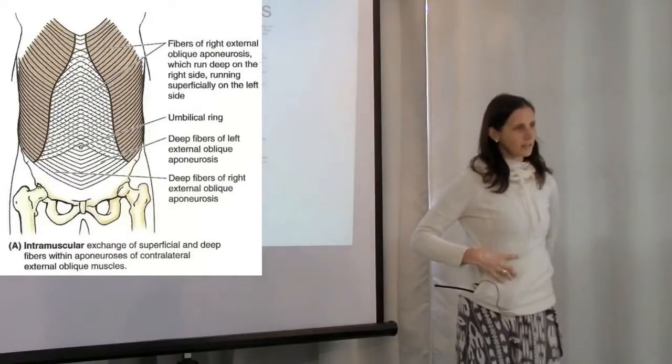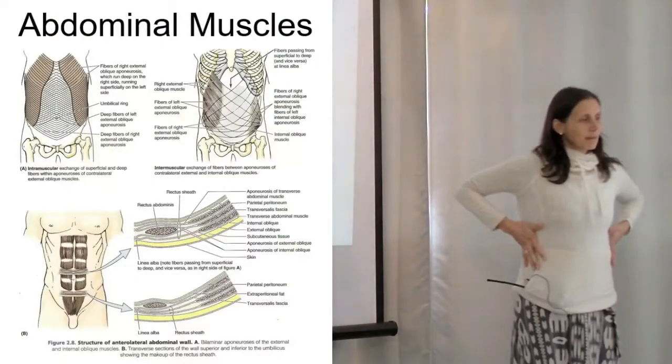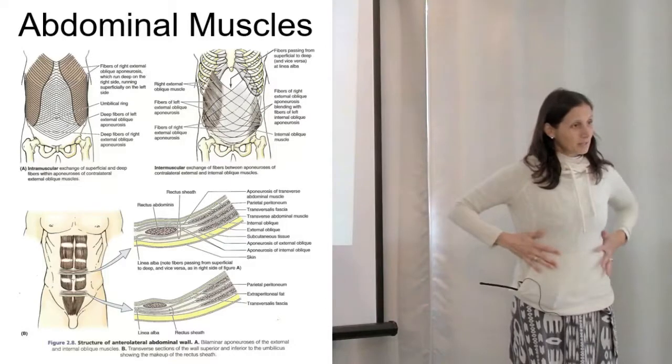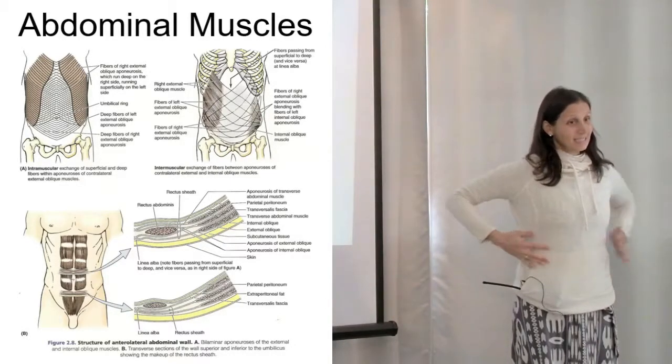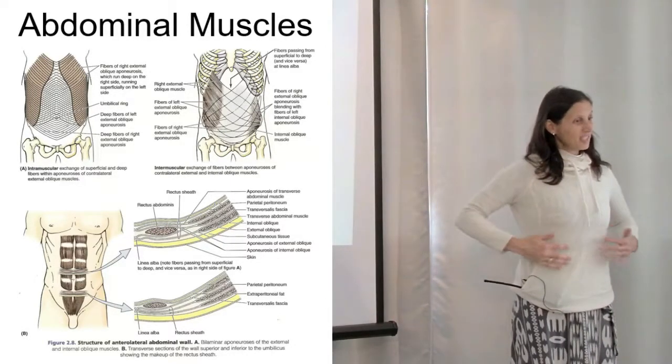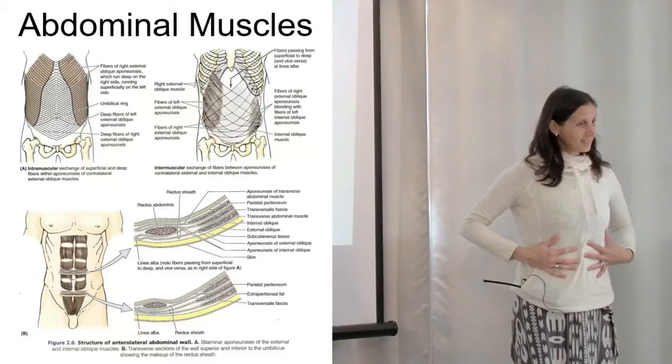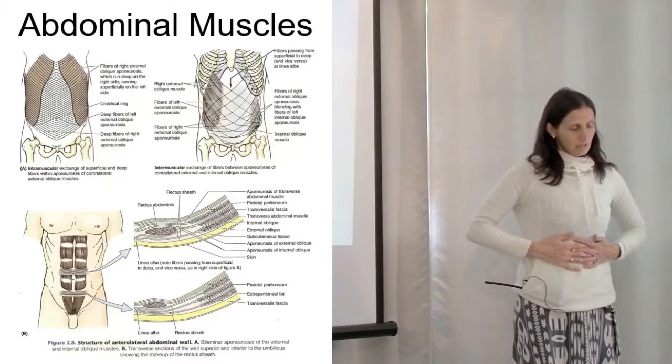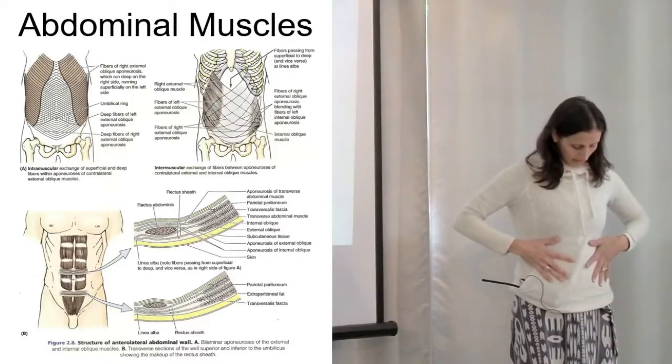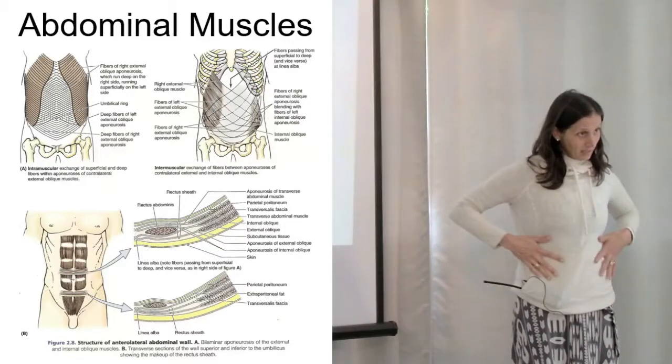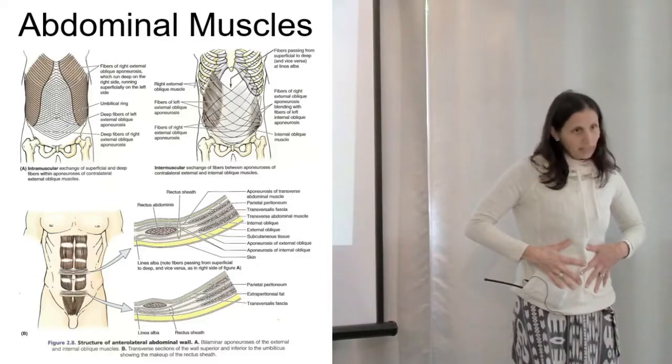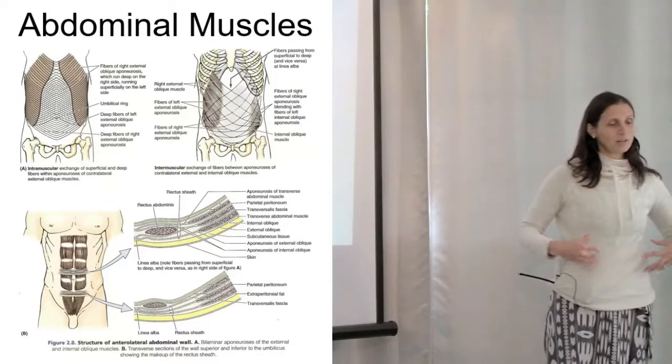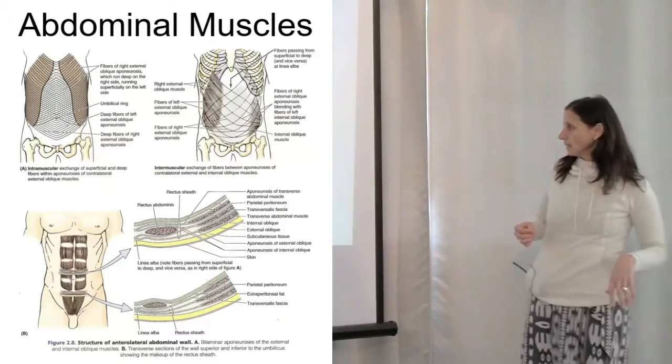We talked about the muscles down here, but where do they start? Way up here. Even transverse abdominis is way up here, and its main job is to compress the abdomen. The obliques are the same - they start way up here and come in diagonally, so they also help compress but they help with rotation.